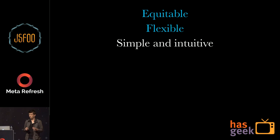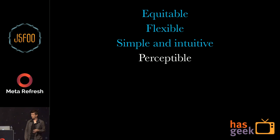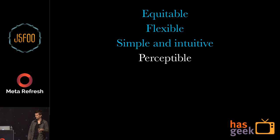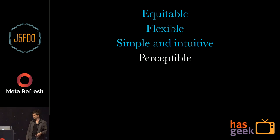Design should be perceptible — if you can't see it, it doesn't exist. With young babies it takes eight months before they achieve object permanence. As adults, when we're interacting with something, if we can't see that it's there we don't know it's there, so don't hide anything. Perceptibility varies according to different requirements — being equitable and flexible means if someone is unable to use their legs, you need to allow them to use a wheelchair. Design should also be tolerant.